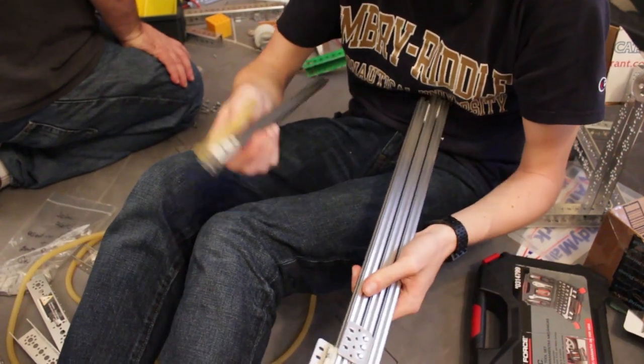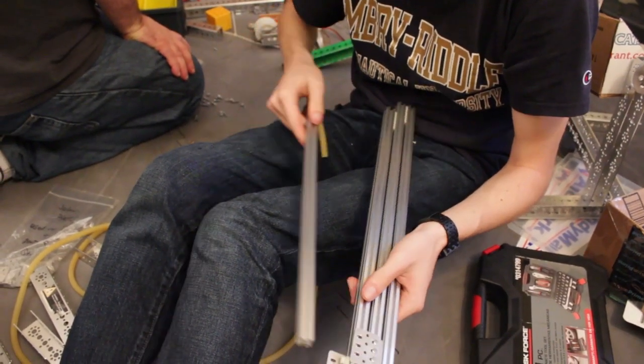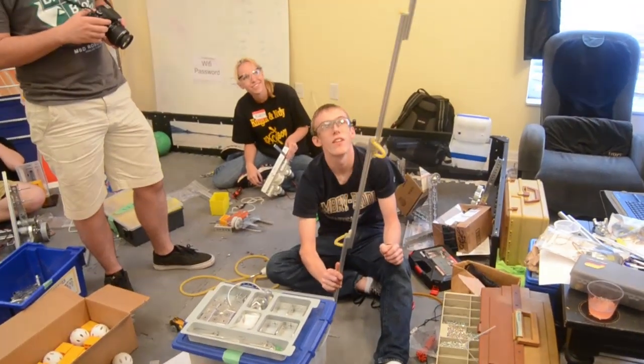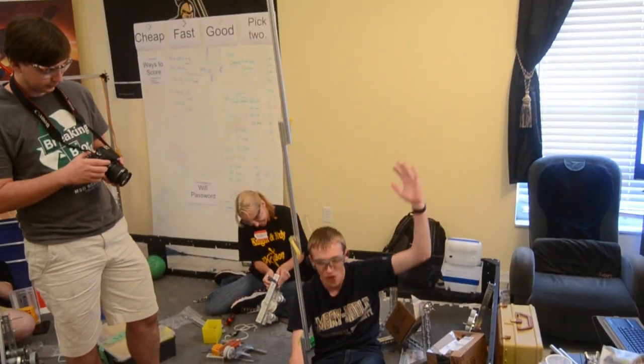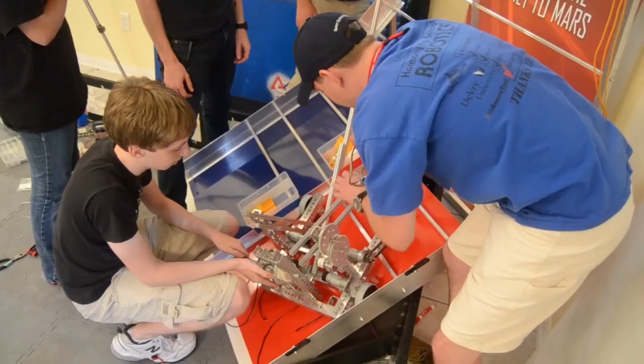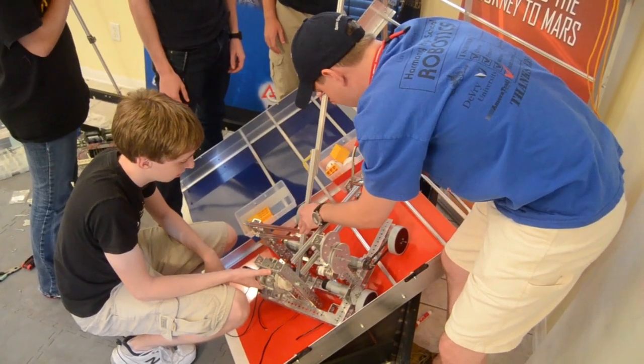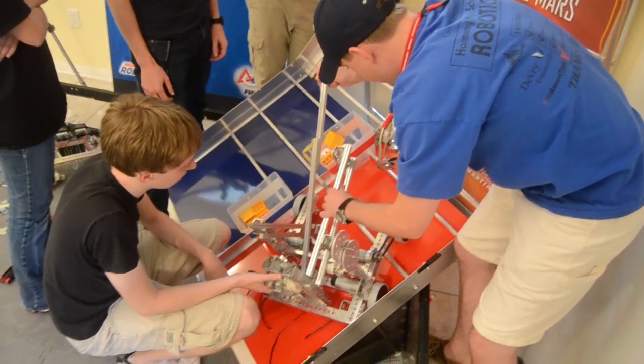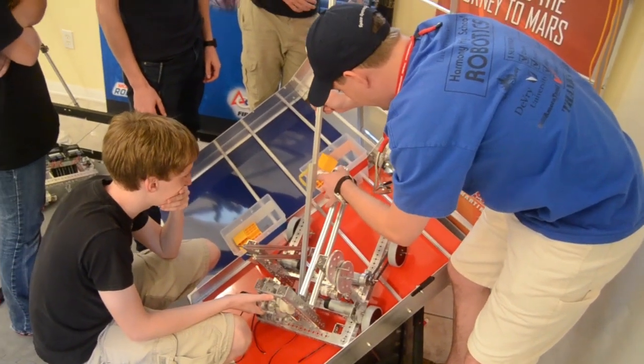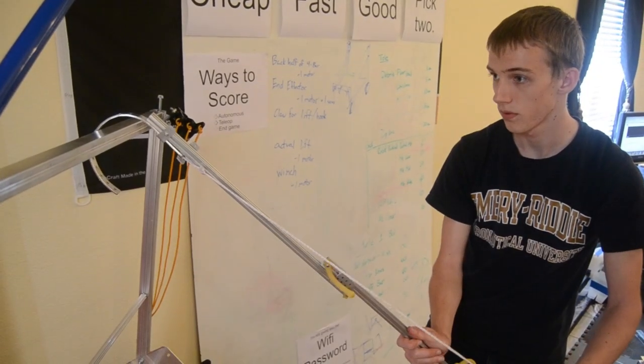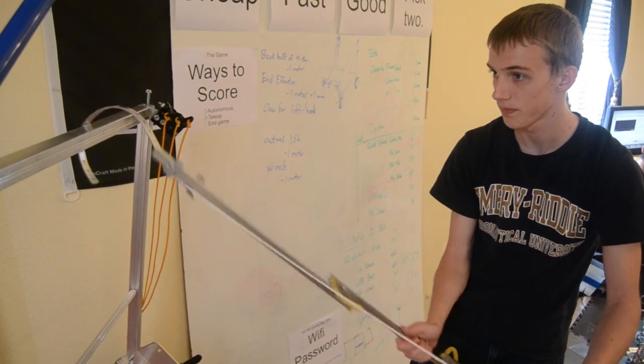For the lifting mechanism, we use Rev Robotics extrusion and the new linear slides. This whole system is sprung in the extended position with latex tubing and is held back by a winch and cable that's powered by two Neverrest 60 motors. By letting the winch and cable out, we extend the arm, hooking on and pulling ourselves up.